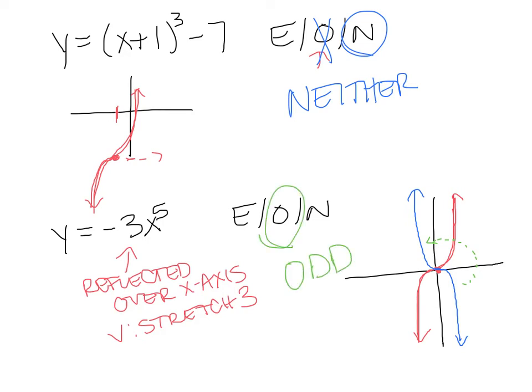A good rule of thumb with odd functions: if it hasn't been shifted at all, it stays odd. If it has been shifted, all bets are off.